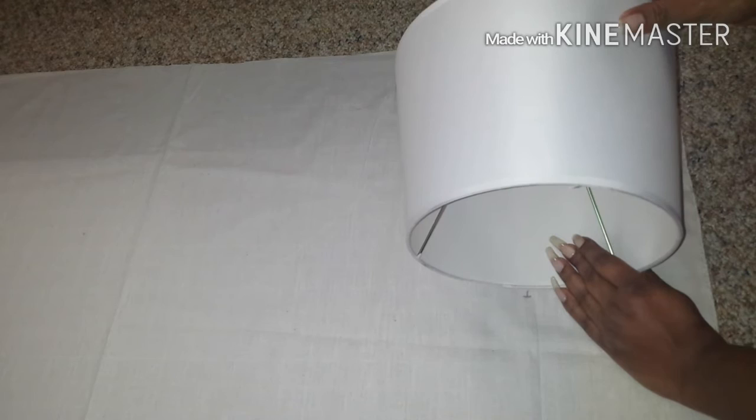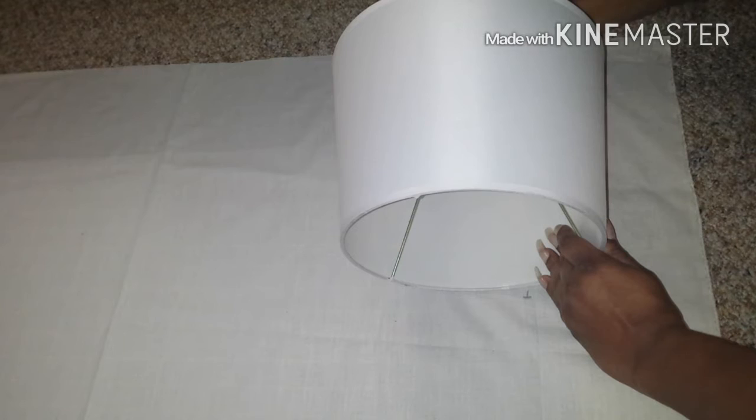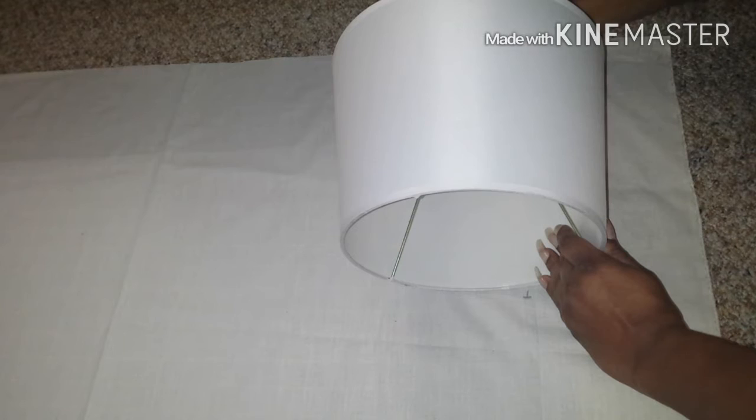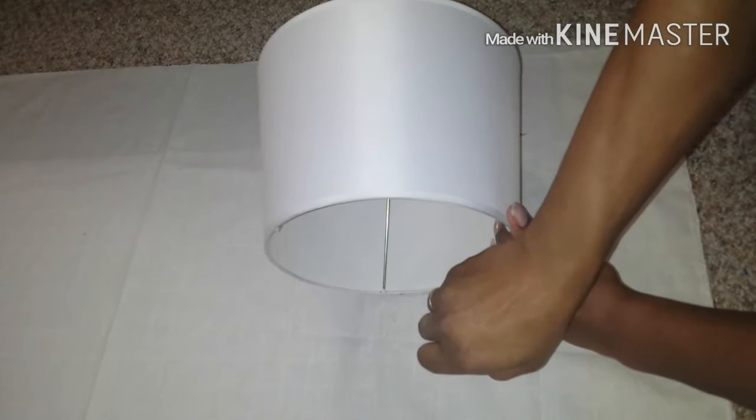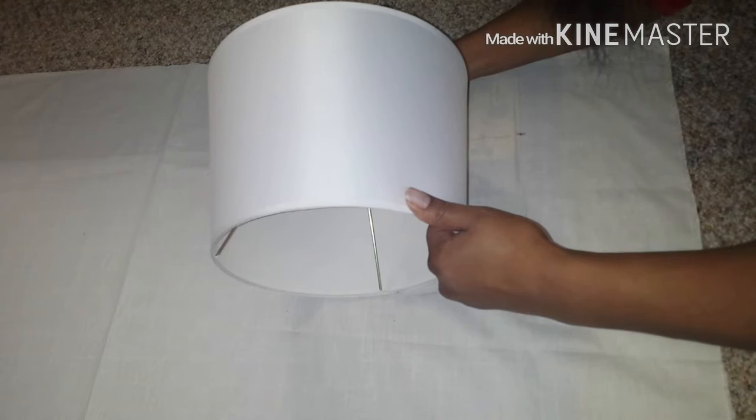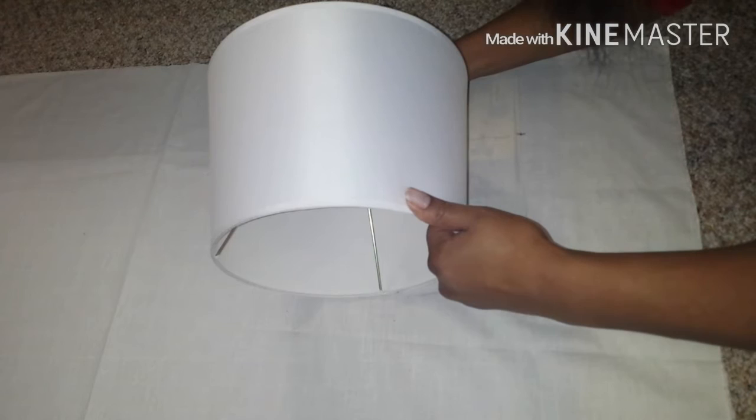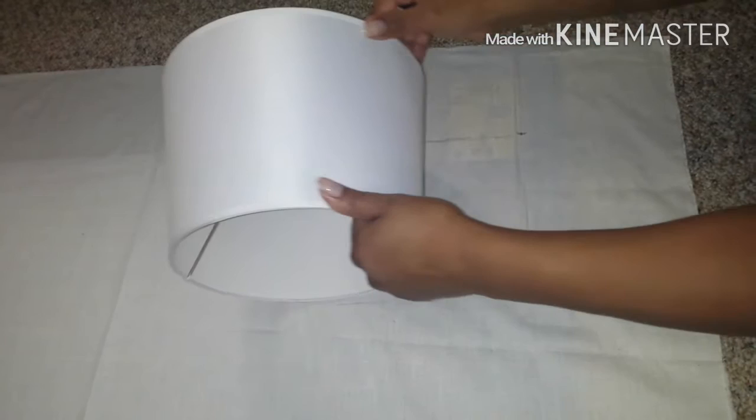So I've got this end of the seam marked. I've got this end of the seam marked. And what I'm going to do is slowly roll it and mark as I roll. Because the shape of a lampshade is slightly curved, roll it slightly and mark it a little bit. Roll it and mark it.